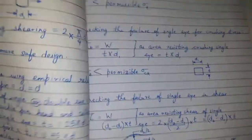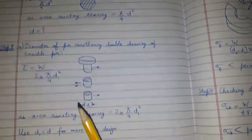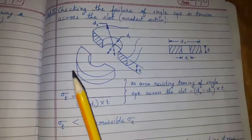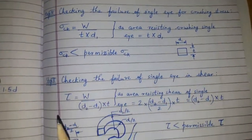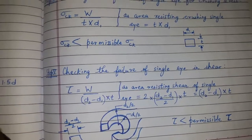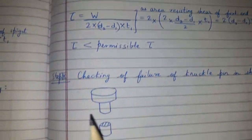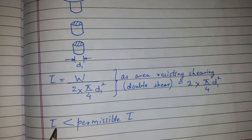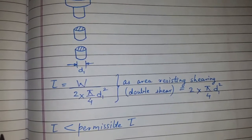Overall, what we have designed: first we obtained the diameter of the pin, then used the empirical relationship to find all dimensions of the knuckle joint. Then we checked failure of the single eye in tension, in crushing, and in shear. Similarly, we checked failure of the double eye or fork in tension, in crushing, and in shear, and then again checked the failure of the knuckle pin in shear. After every calculation we verify whether the stress is less than the given permissible stress, and once confirmed, we conclude that our design is safe.